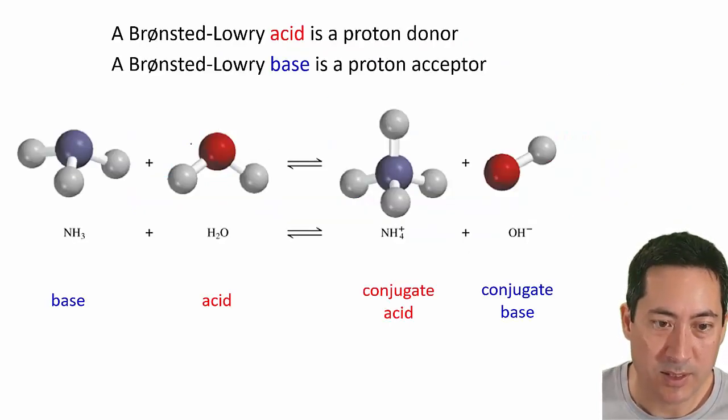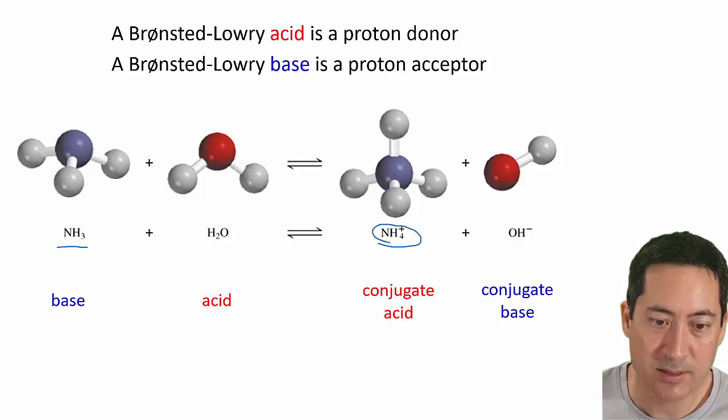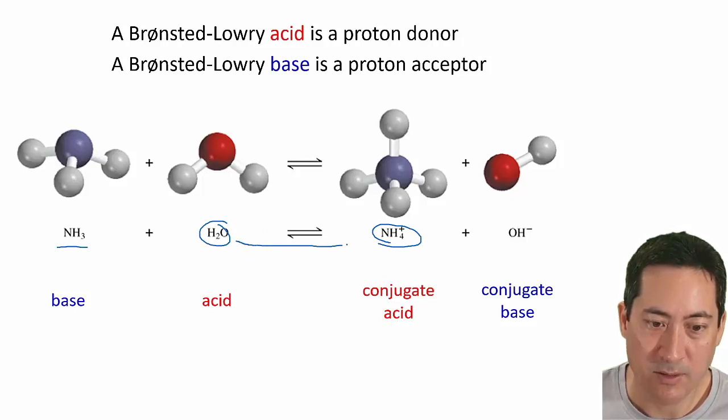What you need to be able to do is recognize whether it's an Arrhenius, and you do that by looking at the equation. You can see that this here has now gained an H+, and this one here has given off an H+ to go over here.